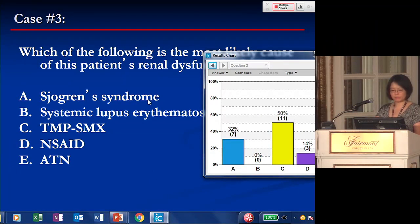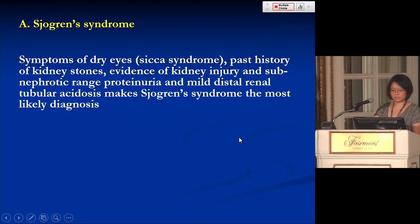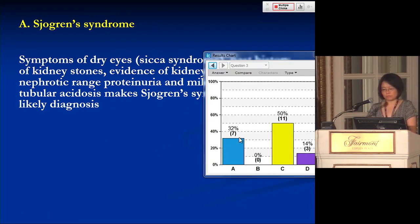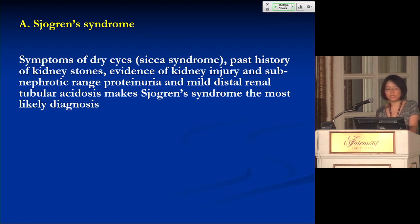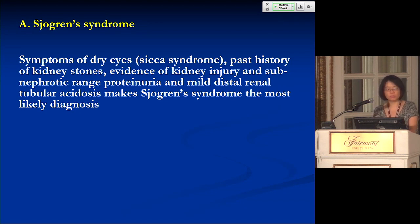We have a split between Sjögren's syndrome and use of Bactrim. The most likely diagnosis is Sjögren's. She had symptoms of dry eyes — that's the sicca syndrome. A past history of kidney stones, evidence of kidney injury, sub-nephrotic range proteinuria, and mild distal renal tubular acidosis. If one were to think this was AIN induced by Bactrim, it's unlikely to cause sicca syndrome or distal RTA.